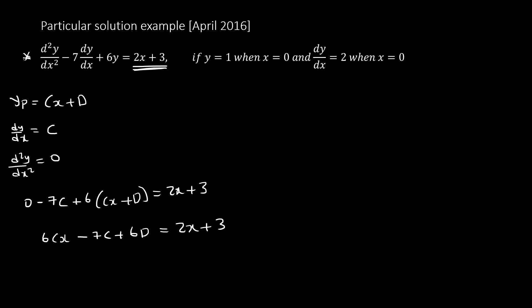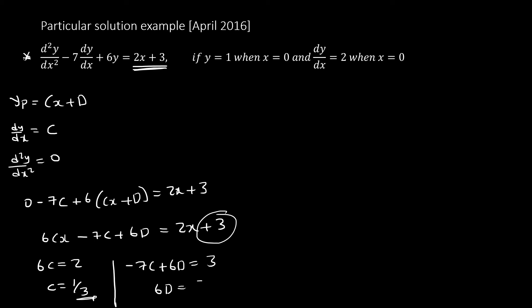Comparing coefficients of x: 6c equals 2, so c equals one-third. For the constants: minus 7c plus 6d equals 3. Substituting c equals one-third: 6d equals 3 plus 7/3 equals 16/3, so d equals 16/18 equals 8/9. Therefore yp equals (1/3)x plus 8/9.